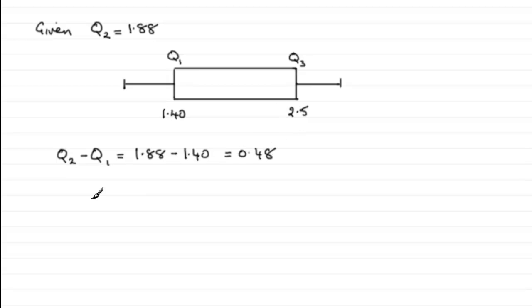If we were to work out what Q3, the upper quartile, minus Q2, we find that we've got 2.5 minus 1.88 and what does that give us? 0.62.